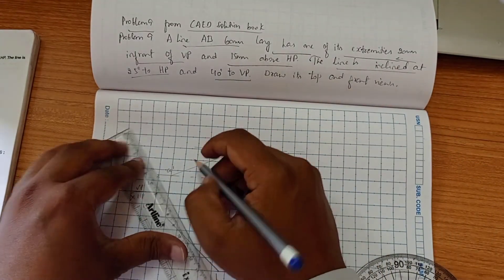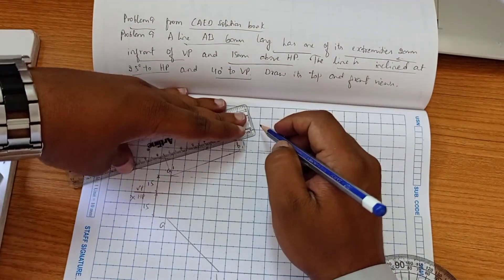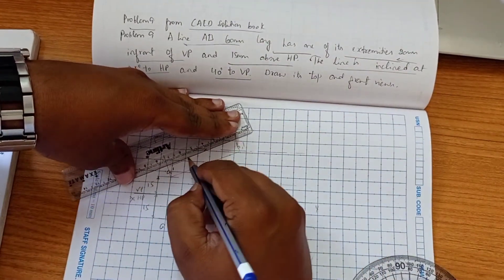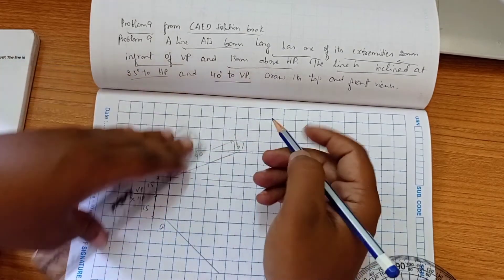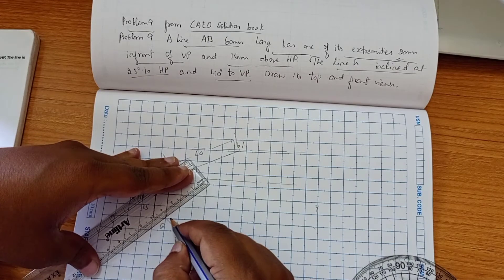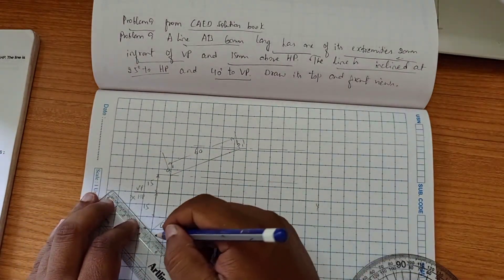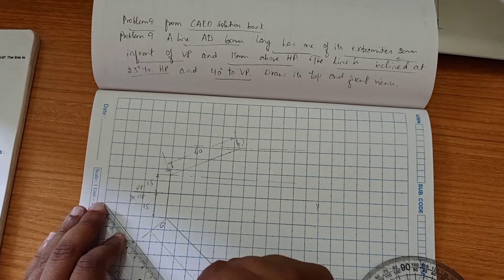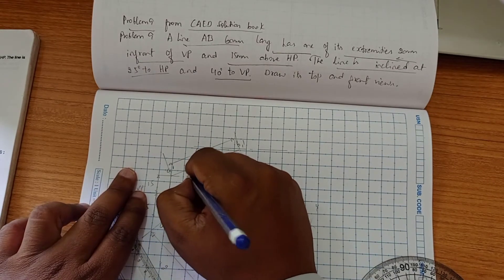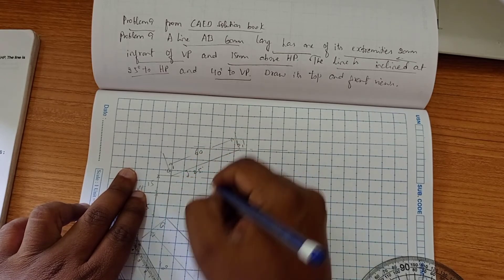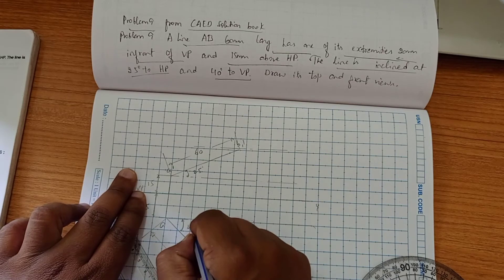This is AB1 dash. We can show the 60 measurement. This angle is 25 degree and this angle is 40 degree.